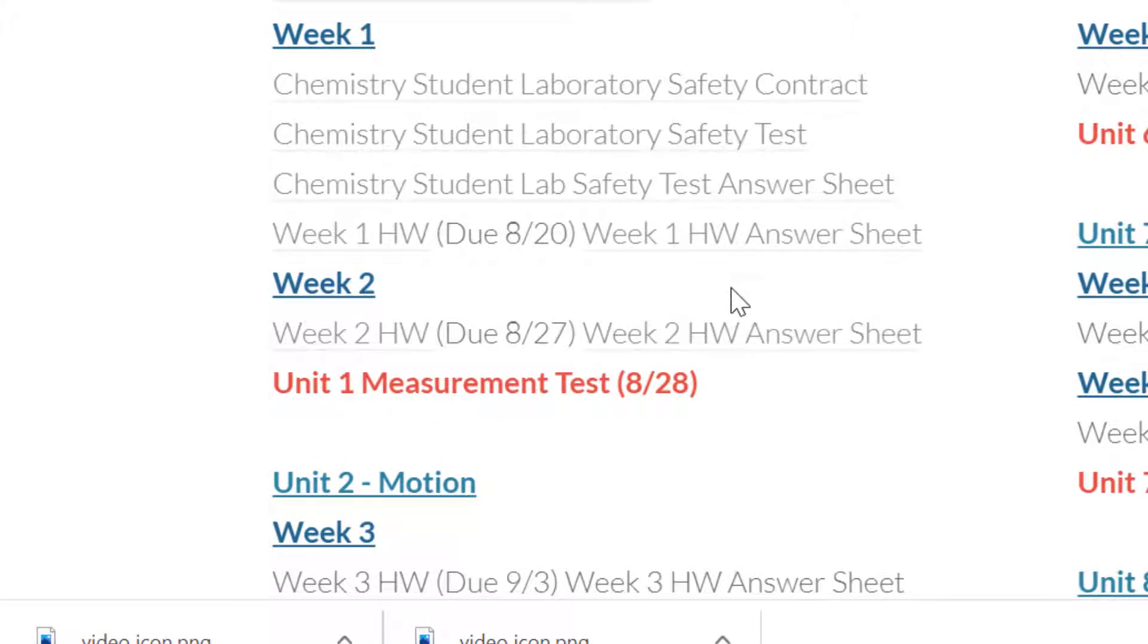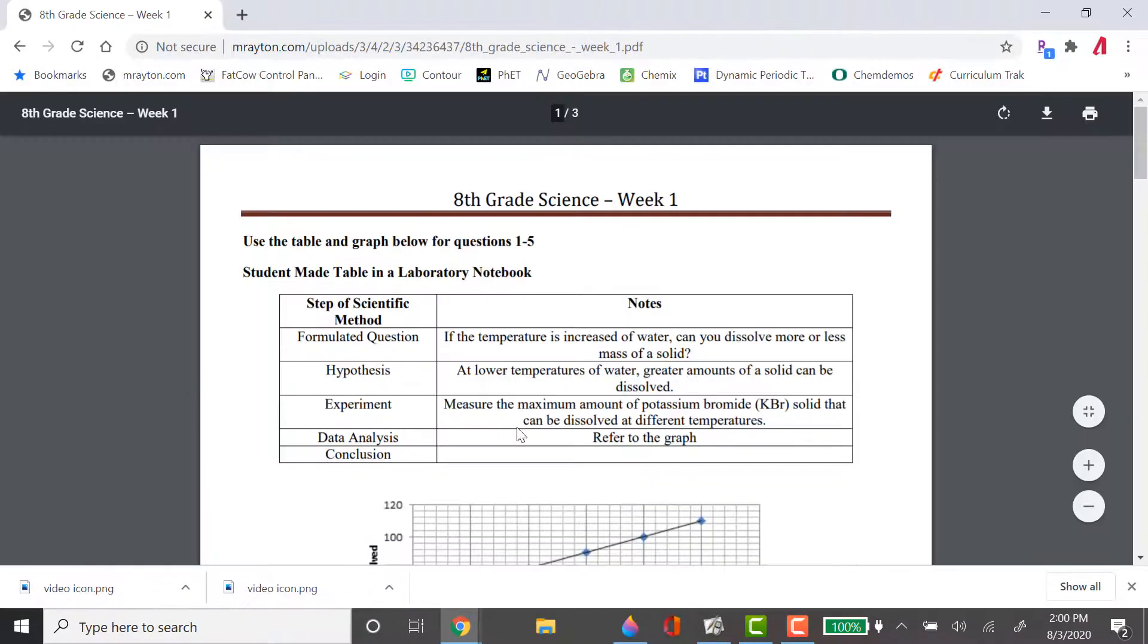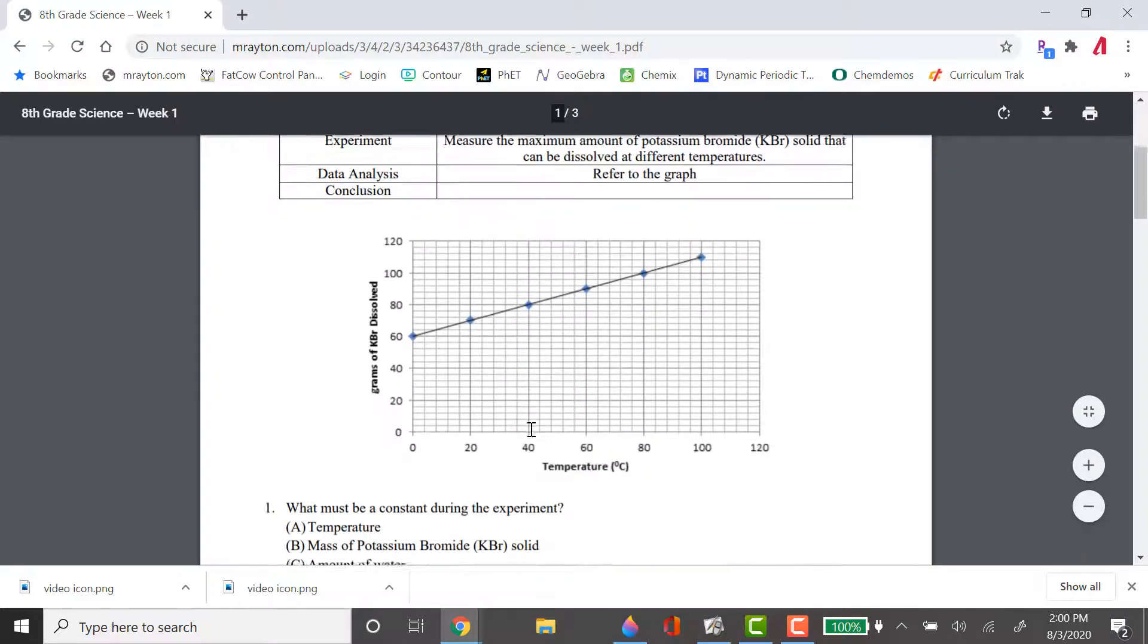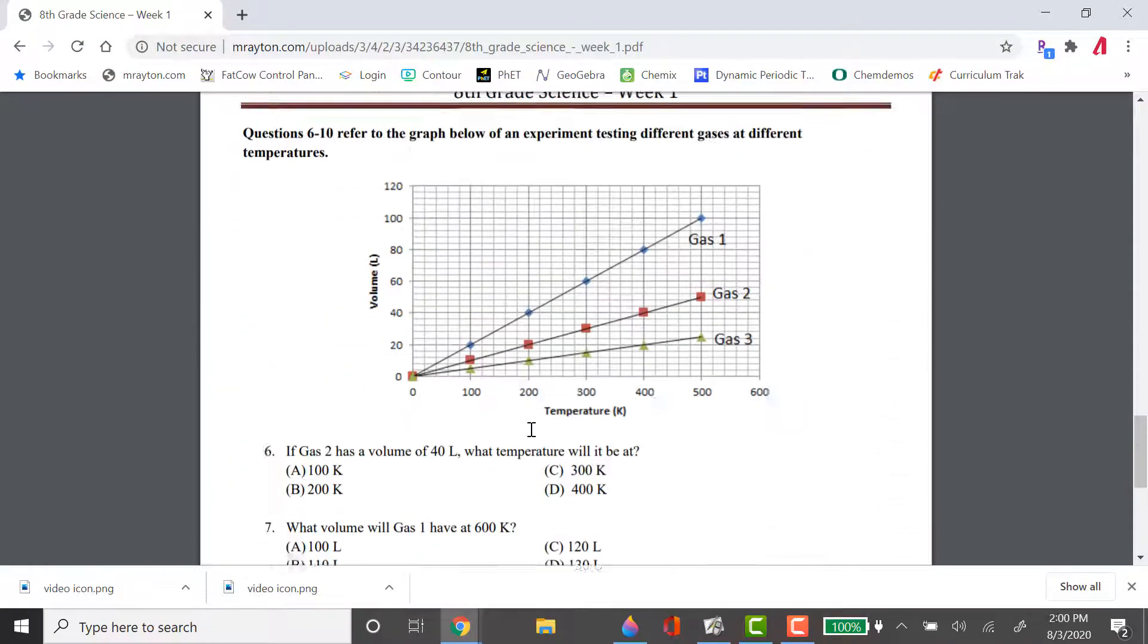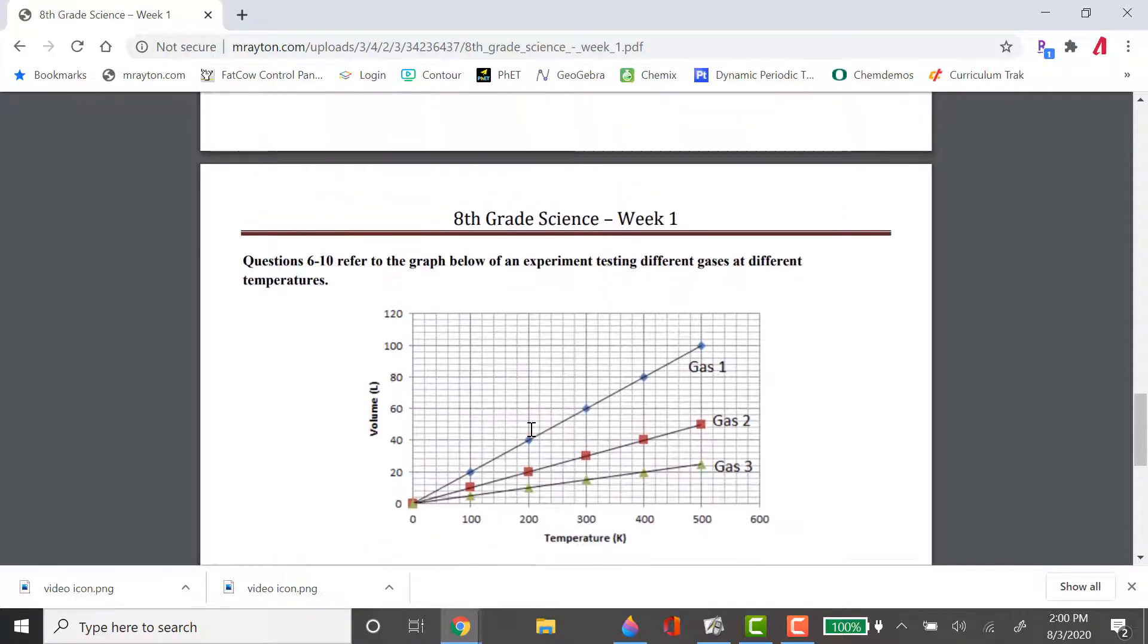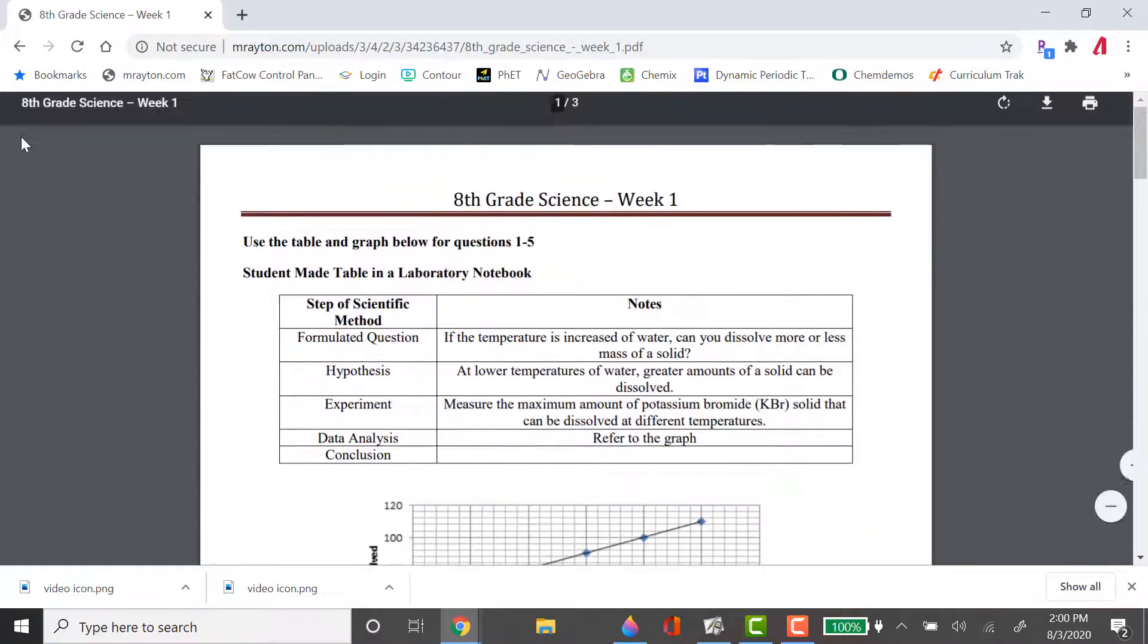Now, when school starts, our first week of school, you can see it says due 8-20. 8-20 is Thursday of the first week of school, which means you have all week to do your homework, your week one homework. You have all week to do it. You just have to turn it in by Thursday night at midnight. How do you do that? Well, you're going to go right here where it says week one homework. You click on that, and it brings up a PDF of your week one homework. You can see week one's homework. Most of your homework assignments are about 10 questions or so. Where do you put in your answers to these 10 questions?